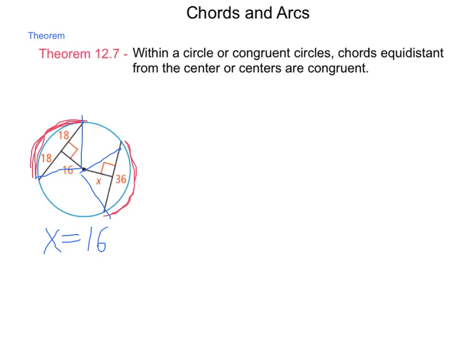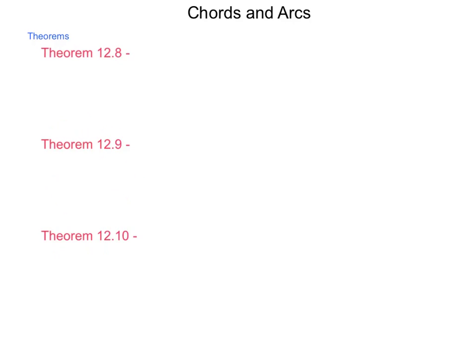Now, we still have a few more theorems to go over in this lesson. Let's begin with theorem 12.8. Theorem 12.8 tells us, in a circle, if a diameter is perpendicular to a chord, then it bisects that chord. So we can start to find some new relationships here, similar to the ones we found when we were working with triangles.